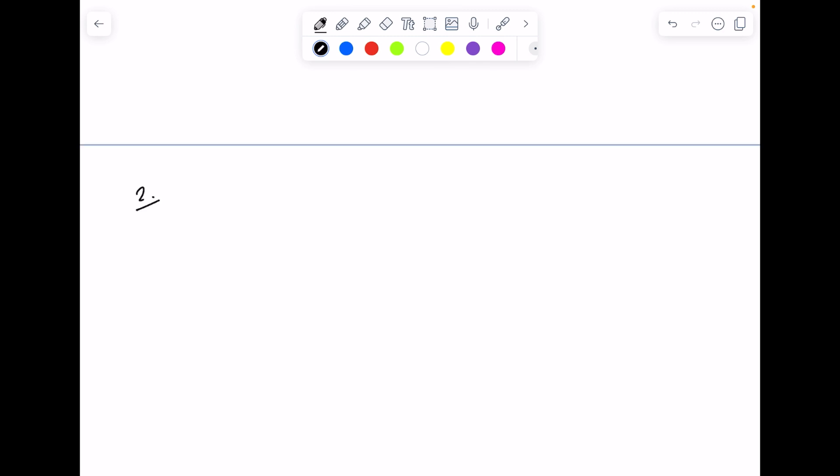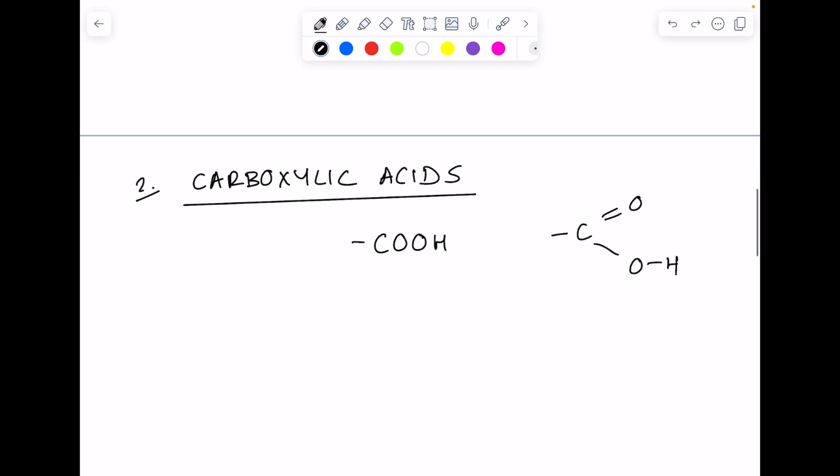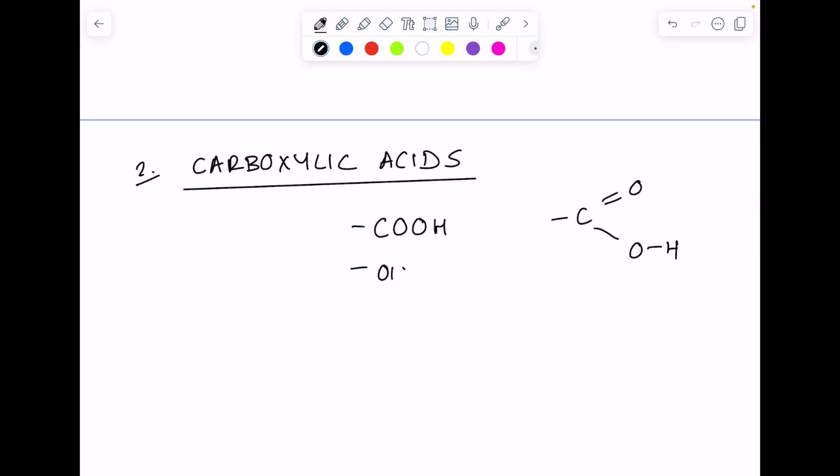Now let's consider carboxylic acids. You might have studied this at IGCSE or GCSE. They have the functional group COOH, which looks like this, and they're named using the suffix OIC ACID.